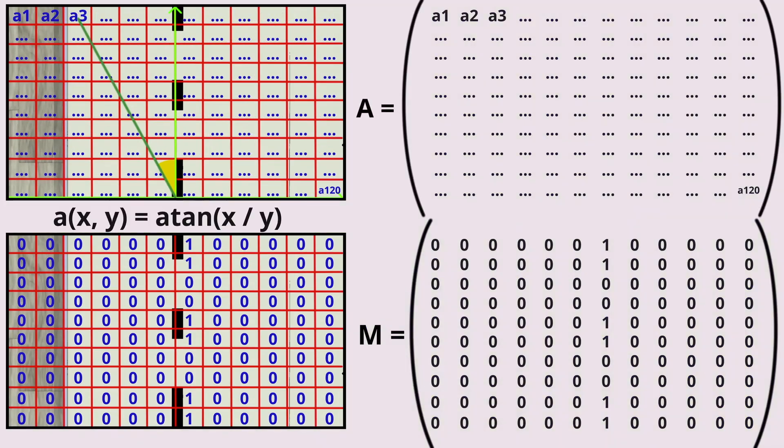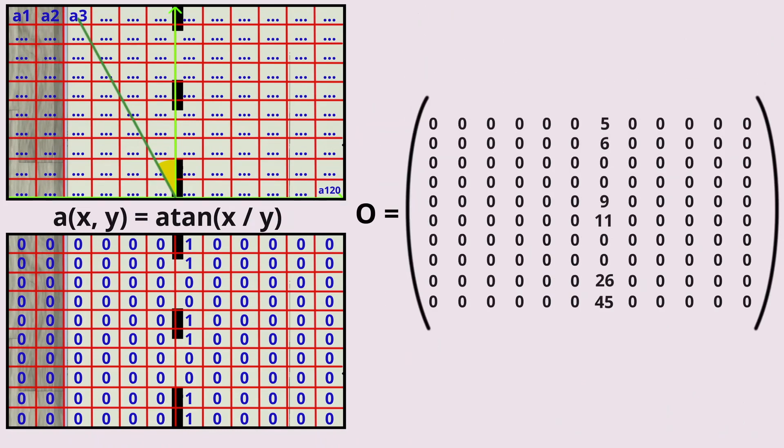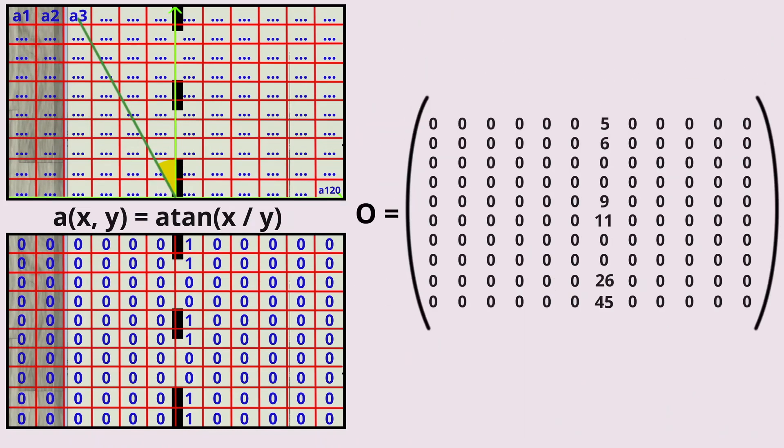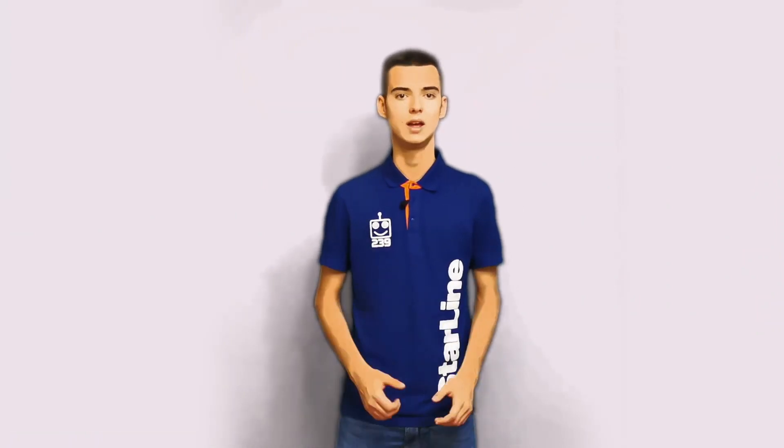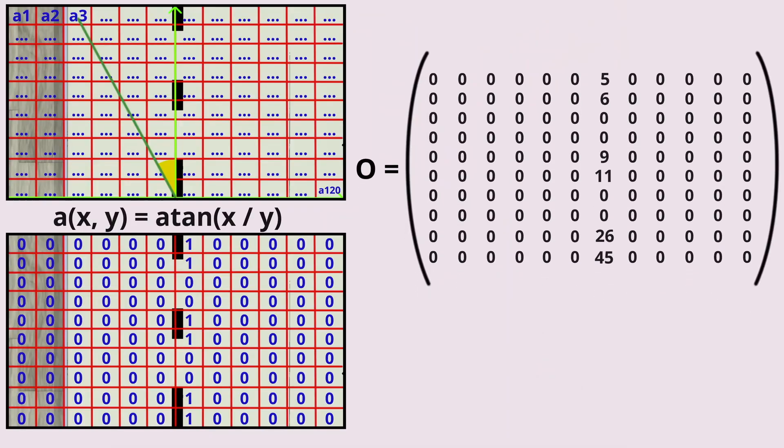After that, these matrices are multiplied, and the result is a matrix with non-zero angles. That is, only those angles where there is a black line, and then I'm just finding average between all non-zero values. In the result, we have only one value: deviation from a line.